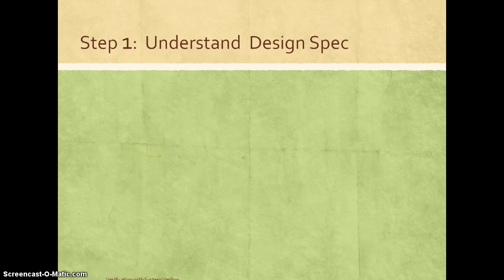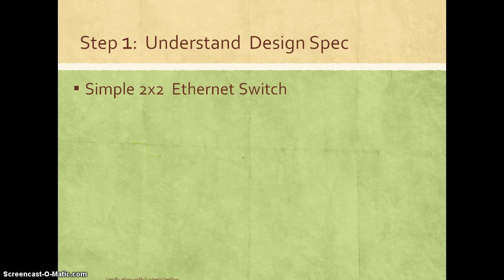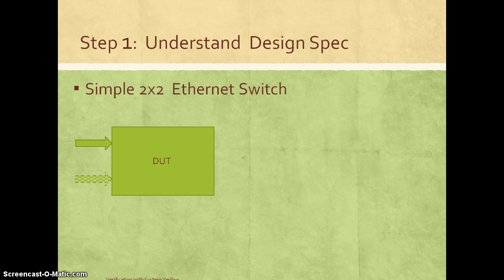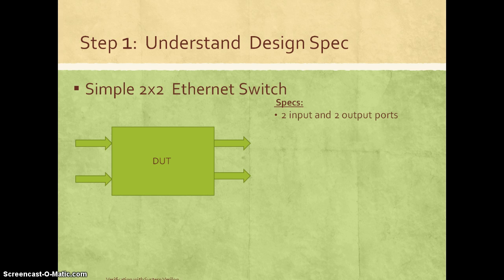Step one in any verification is first to understand the given design spec. In this case, let's take a simple two-by-two ethernet switch. This is a simple switch that can take packets on two input ports coming to the design under test, which is the ethernet switch. These packets can be routed on two output ports based on some attributes in the packet. So its design specification might look like this.